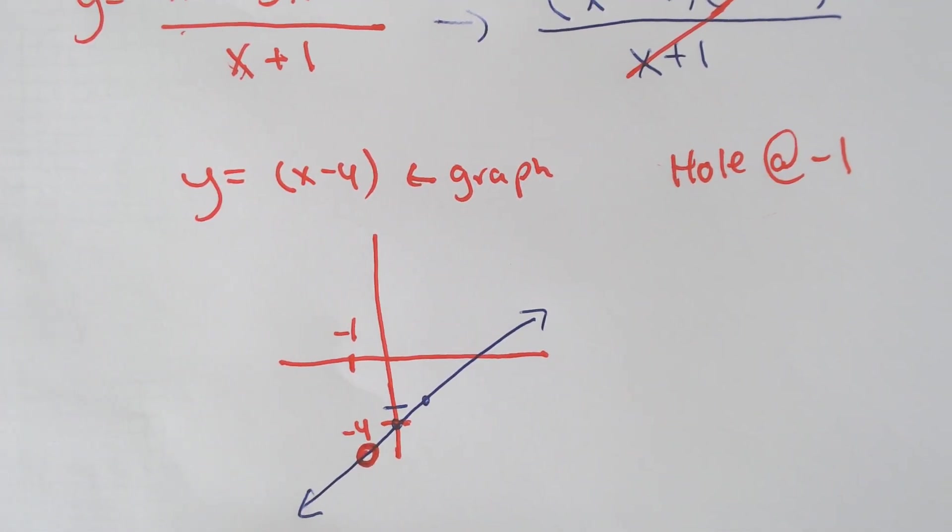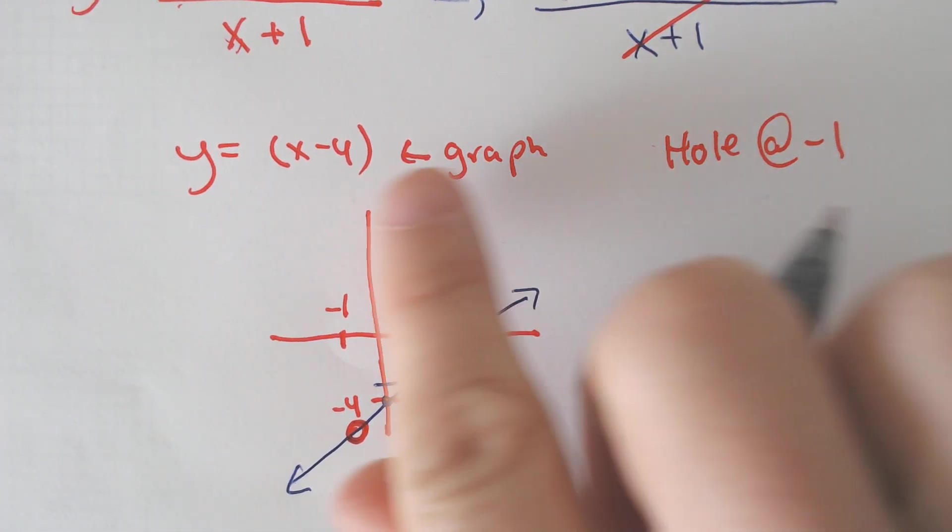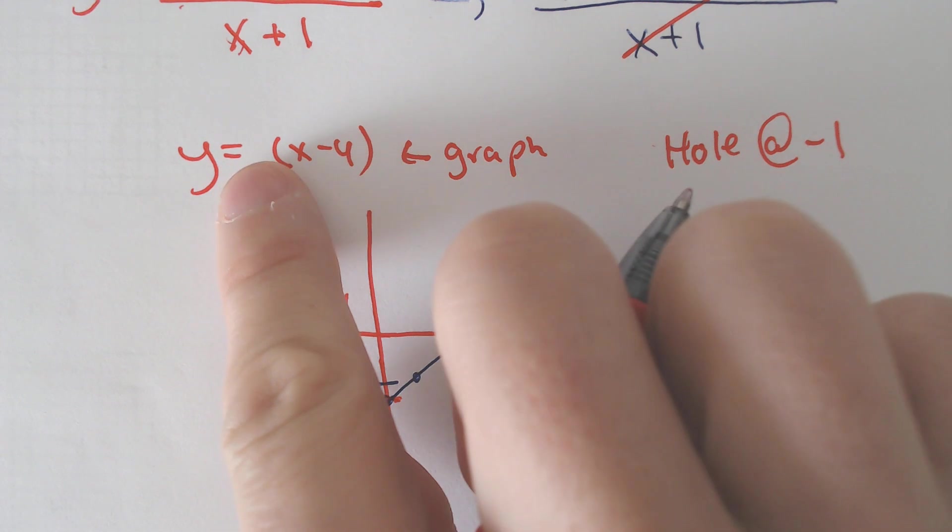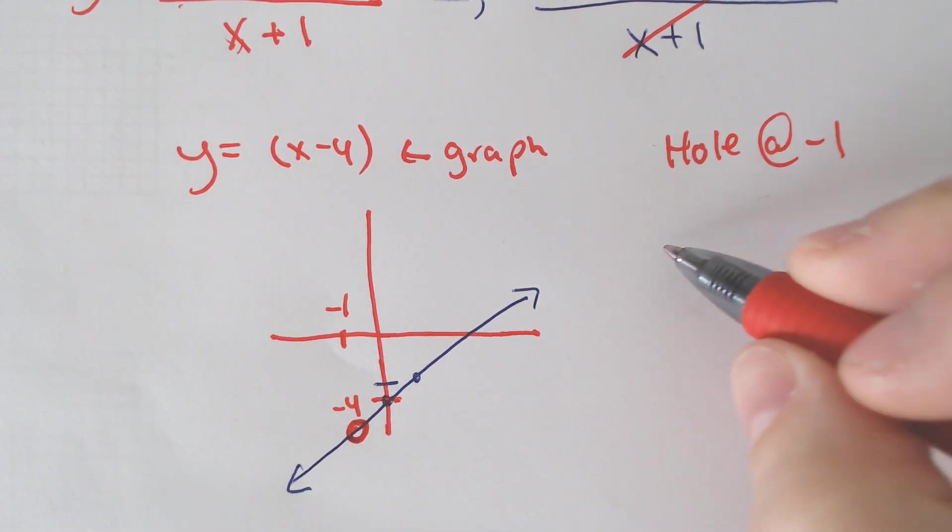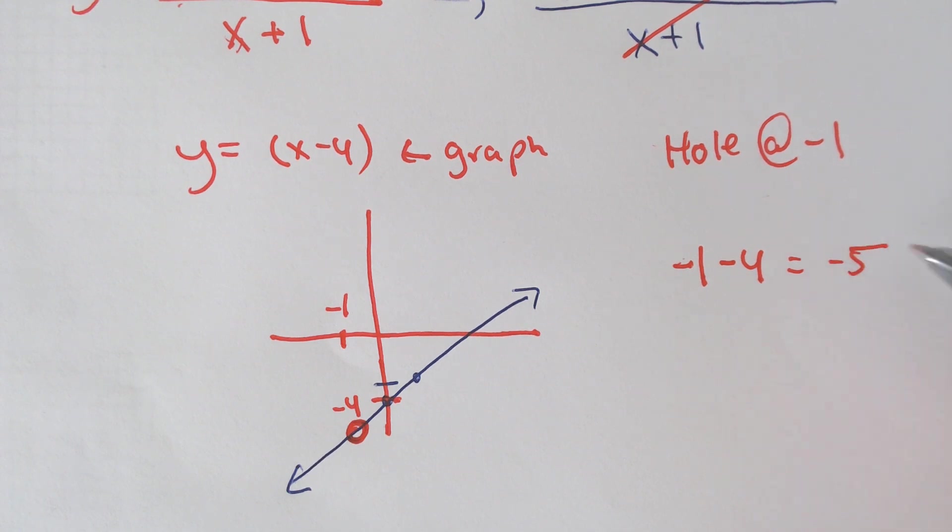It has a break in the line, and if you want to be more specific, which you should want to be more specific, you should plug in that number for x. So if we plug in the number for x, negative 1 minus 4 ends up being negative 5. So the hole should specifically be at negative 1, negative 5.